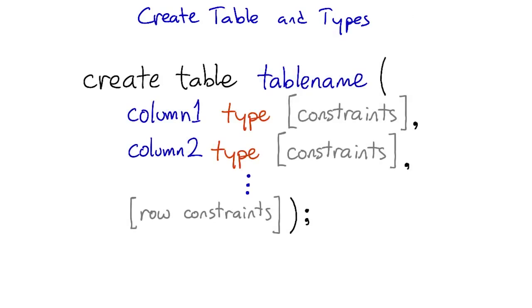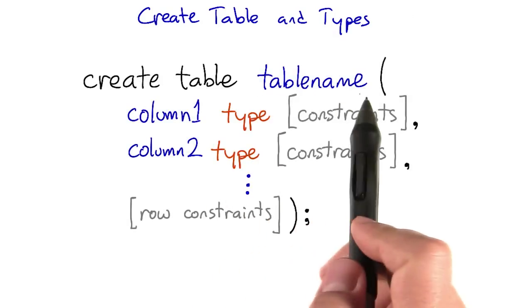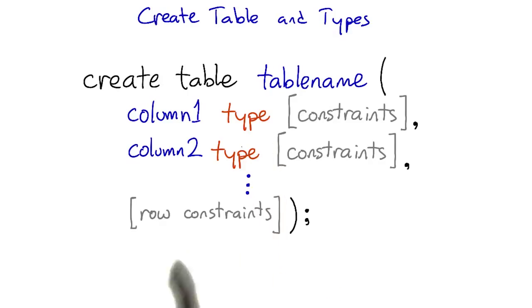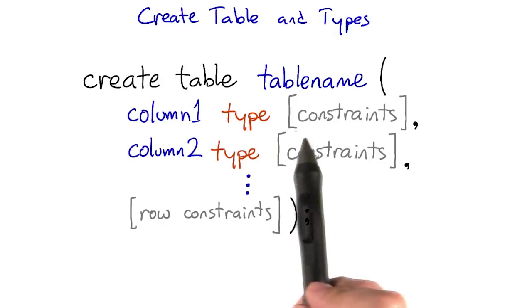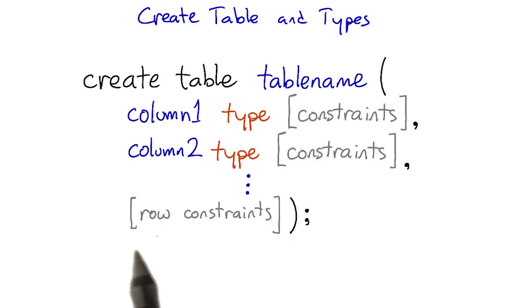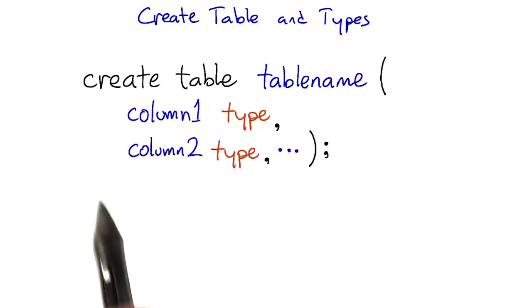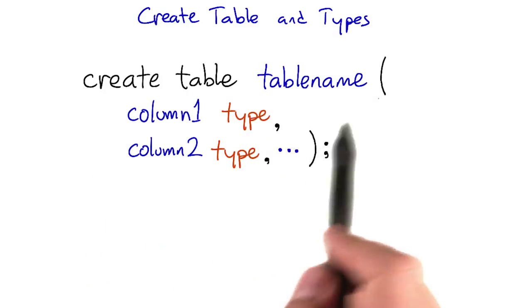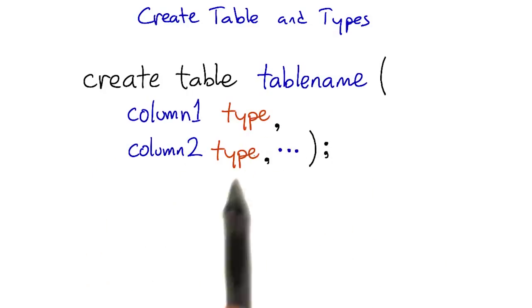You can add a new empty table to your database with the CREATE TABLE command. When you create a table, you'll give the name of the table and the names and the types of each column. You can also set constraints on each column and on the row as a whole. We'll talk about constraints shortly, but for now let's focus on types. Here's the simplest form of the CREATE TABLE command — no constraints, only columns with their types, and a table name.